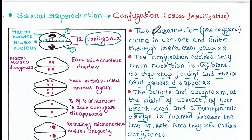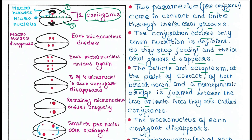Before conjugation they were known as pre-conjugants, and now they are known as conjugants. Each cell contains a macronucleus — the large black-colored one — and a micronucleus — the small red one. The macronucleus of each conjugant disappears, and only the micronucleus remains.